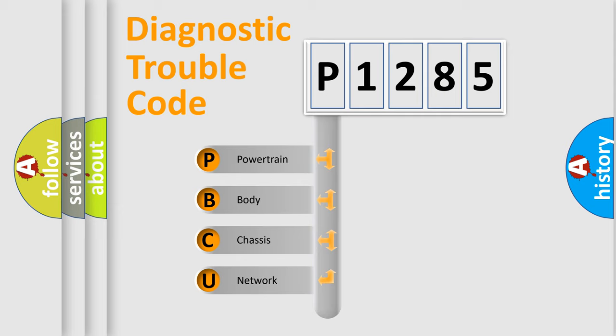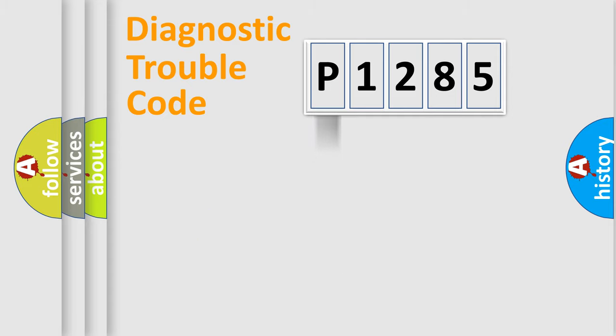We divide the electric system of automobile into the four basic units: Powertrain, Body, Chassis, and Network. This distribution is defined in the first character code.